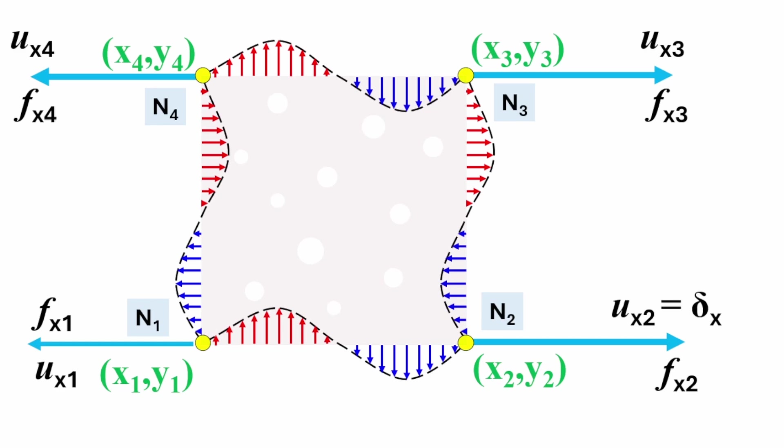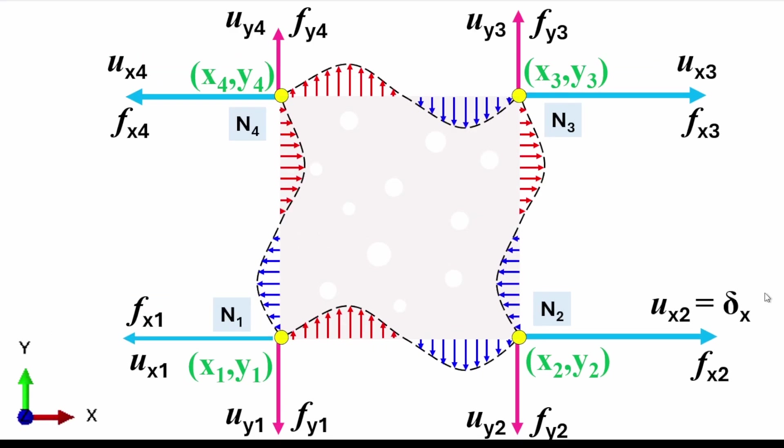Each corner node has boundary conditions imposed, so they're locked in and will have reactions. The first set are the x-axis reaction forces and x-axis displacement. We have ux1, the displacement of this node in the x direction, ux2, the displacement of node 2—which will take the value of dx because this is the load we're imposing. We get all the displacement and force components in the x-axis, and we'll do the same in the y-axis.